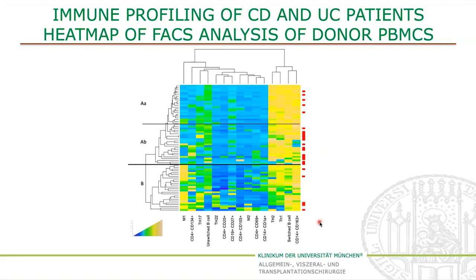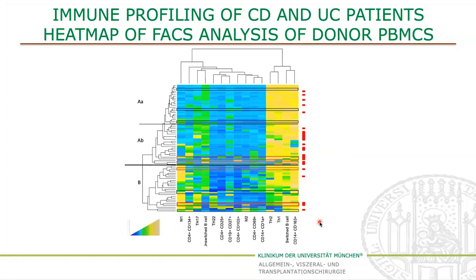You can see that there are different cell types contributing to the inflammation in CD than in UC. The main focus of this project was to test if we are not only able to see a difference between UC and CD analyzing PBMCs, but also if our mouse model can differ between both types on a cellular level as well as phenotypically. Therefore, we reconstituted NSG mice with PBMCs of patients we also analyzed for this heatmap. Here you can see the donors we used — in red the CD donors and in black the UC donors.